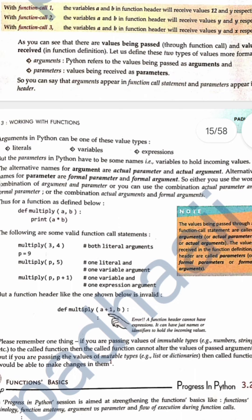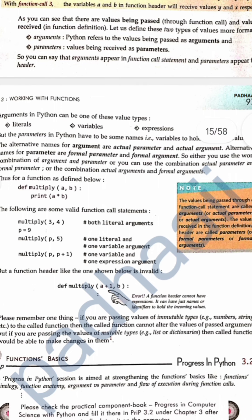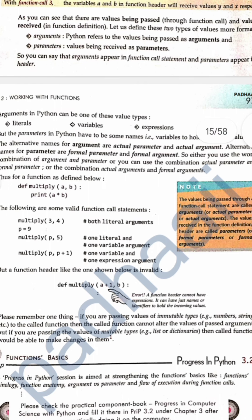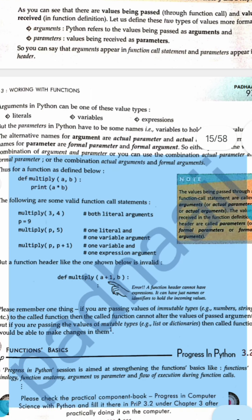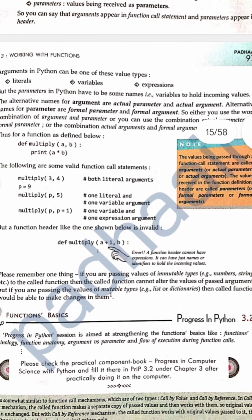If I say multiply with three comma four, I am passing both as literals. So it gives me p equals nine. If I say multiply p comma five, one is a variable and one is a literal. If I say p comma p plus one, then one is a variable and one is an expression — so anything can be passed.